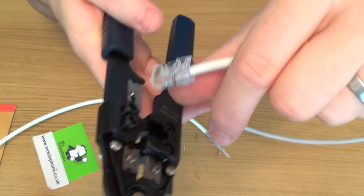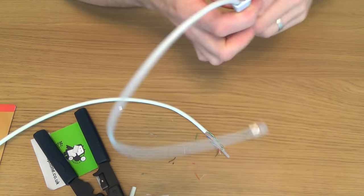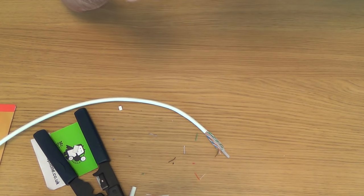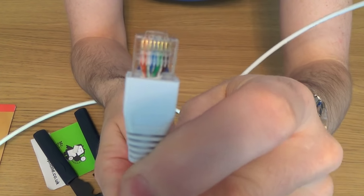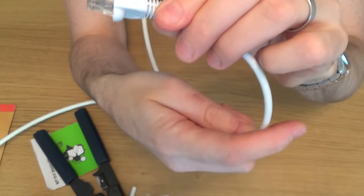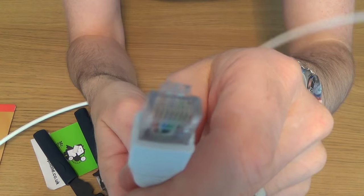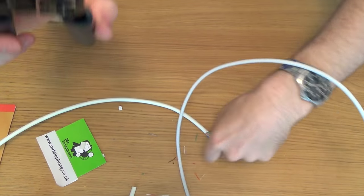So then we just slide it out, put your strain relief boot on, and that is it. That's your little RJ45 plug. That's how you use the tool.